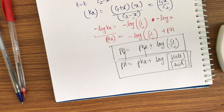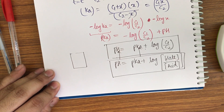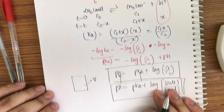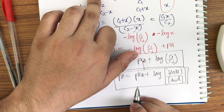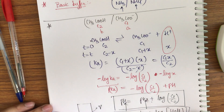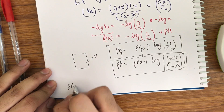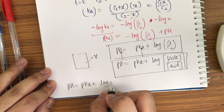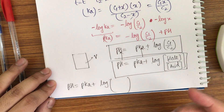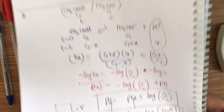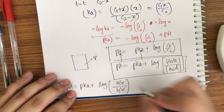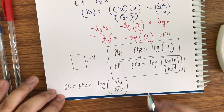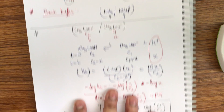Another form: since both the acid and salt are in the same container of volume V, the volume cancels out. If moles of salt = A and moles of acid = B, then pH = pKa + log(A/V ÷ B/V) = pKa + log(A/B). So we can work directly in moles.